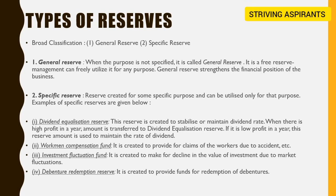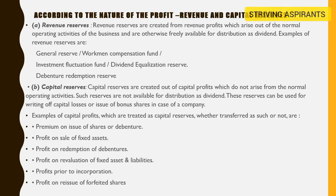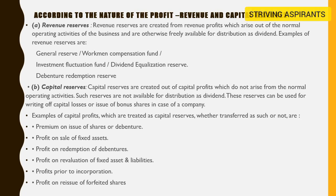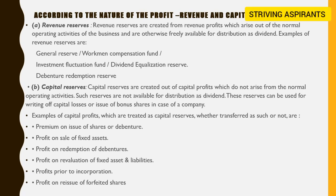According to the nature of profit, reserves are classified into revenue reserves and capital reserves. Revenue reserves are created from revenue profits arising from daily or operational activities, and are freely available for the distribution of dividend. Examples of revenue reserves include general reserve, workman compensation fund, investment fluctuation fund, dividend equalization reserve, and debenture redemption reserve.